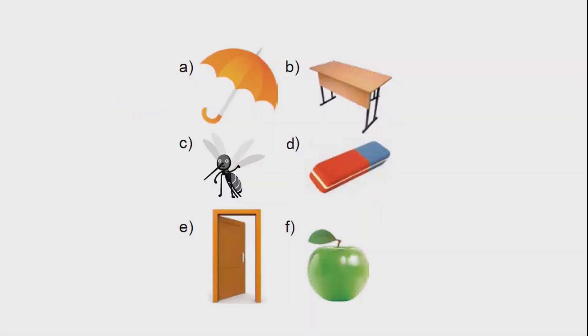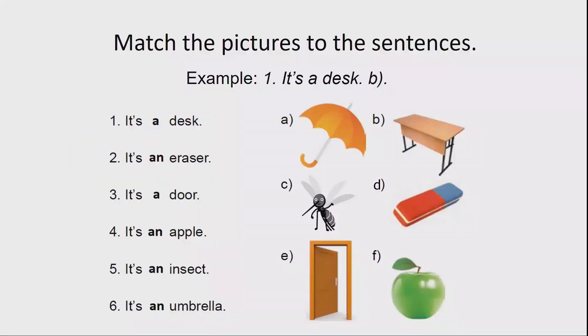Great. Now, look at these pictures. You match these pictures to the sentences. There are six pictures and six sentences, so you can use every picture only once. Write down the letters next to the sentences. For example, number one: It's a desk — Picture B. Work individually, please. Time to check the answers with your partners now.